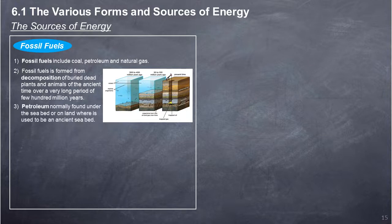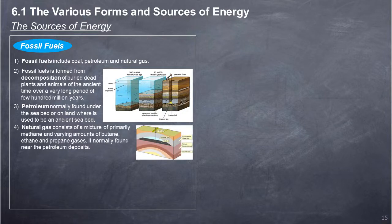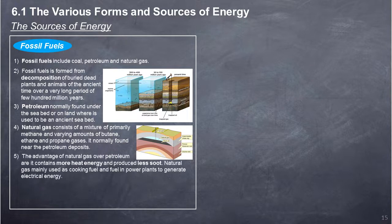Petroleum is normally found under the seabed or on land where it used to be an ancient seabed. Natural gas consists primarily of methane, and varying amounts of butane, ethane, and propane gases; it is normally found near petroleum deposits. The advantage of natural gas over petroleum is that it contains more heat energy and produces less soot. Natural gas is mainly used as cooking fuel and as fuel in power plants to generate electrical energy.